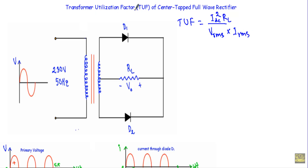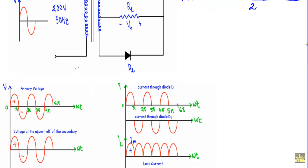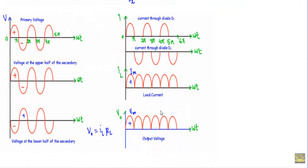Unlike the calculation of TUF in a half wave rectifier or full wave bridge rectifier circuit, the transformer utilization factor of the center-tapped full wave rectifier will be the average of the primary TUF and the secondary TUF. This is because in the case of a center-tapped transformer, we apply primary voltage sinusoidally.